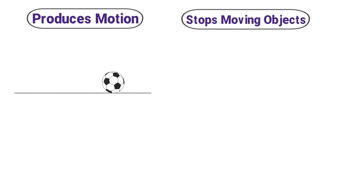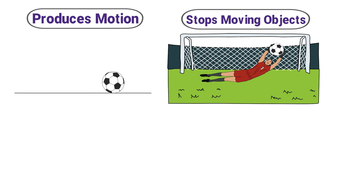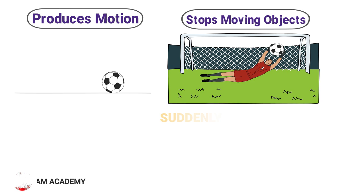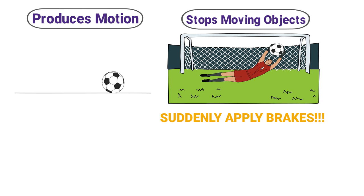Secondly, force stops moving objects. Consider a fast-moving football approaching a goalkeeper. The player uses both hands and exerts force on it, and as a result he stops the fast-moving football. Another example: when a fast-moving car suddenly applies brakes, due to the applied force on the tires, the car suddenly stops. Remember that force can stop a moving object.